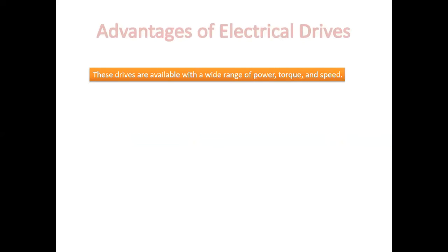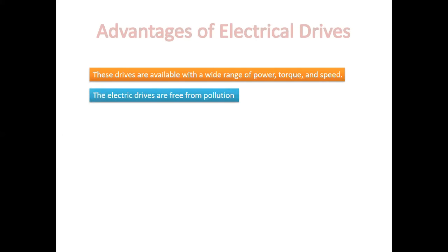Advantages of electrical drives: these drives are available with a wide range of power, torque, and speed. Electrical drives are free from pollution. They operate on all four quadrants of the speed-torque plane — meaning they support forward motoring, reverse motoring, forward braking, and reverse braking. We can also improve the efficiency of the drive.